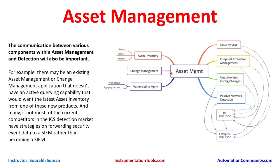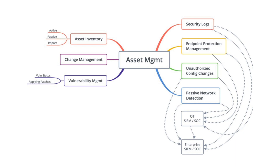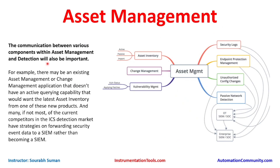Change management can be part of asset management, or asset management can feed data into a separate change management tool. It also helps with vulnerability management — we can know the vulnerability status of assets and apply patches. Many current ICS detection market competitors have started forwarding security events to SIEM rather than becoming a SIEM themselves. Asset inventory, change management, and vulnerability management can all give and receive inputs from asset management.